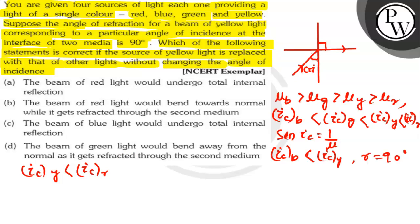According to the given sources of light, blue light has the smallest wavelength. According to Cauchy's relationship, smaller the wavelength, higher the refractive index and consequently smaller the critical angle. So corresponding to blue color, the critical angle is less which facilitates total internal reflection for the beam of blue light. The beam of green light would also undergo total internal reflection.